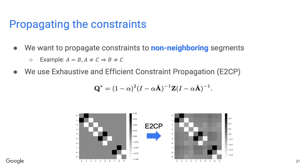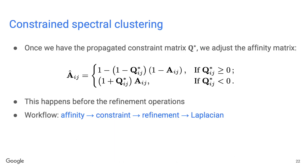Because we only define constraints for neighboring segments, the constraint matrix is very sparse, which is not useful. So we propagate constraints to non-neighboring segments as well. For example, if A and B are the same speaker, and A and C are different speakers, then we can infer B and C should also be different speakers. We use an algorithm known as E2CP to propagate constraints. The image below shows an example of a constraint matrix before and after E2CP. Once we have the propagated constraint matrix Q*, we use it to adjust the affinity matrix A before applying any refinement operations.